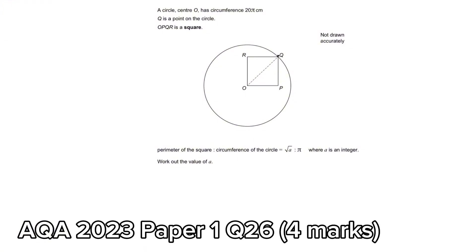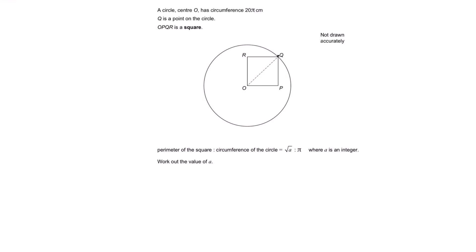In this question we have a circle with center O and circumference 20π. There's a point Q on the circle, and OPQR is a square. The perimeter of the square to the circumference of the circle is given by the ratio √a to π, and we need to find a. When I see 20π, I think of circles and radii, so let's try to find the radius of this circle.